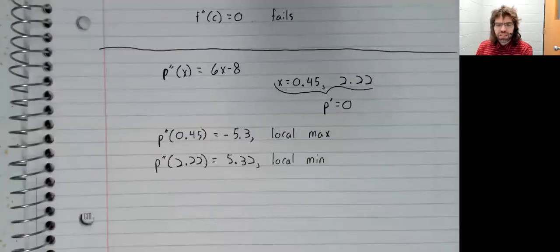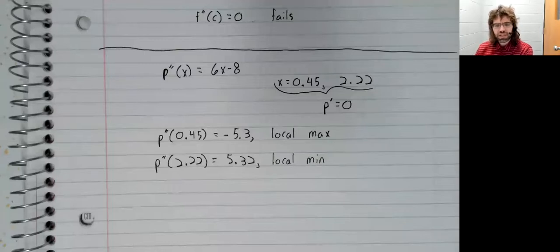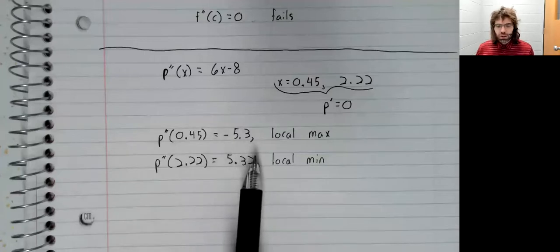I say attempt because the second derivative test can fail if the derivative happens to be zero. That didn't happen here, though.